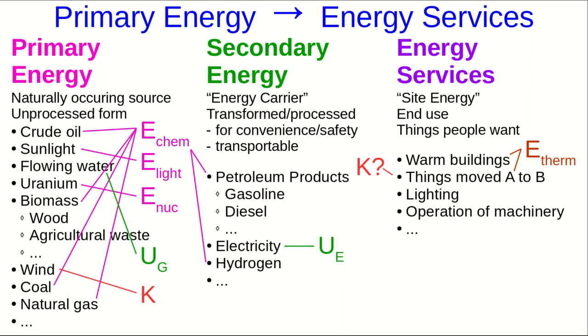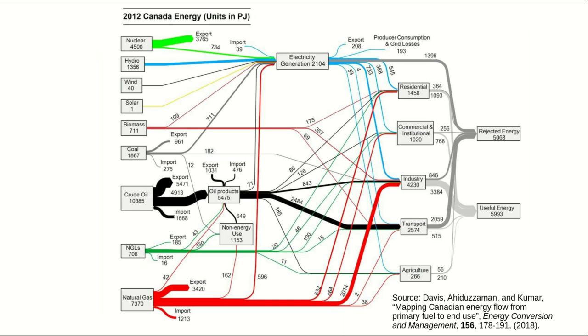On a societal level, all of these conversions of energy from one form to another coming from so many sources can get pretty complicated and visualizing it is difficult. And so there are some diagrams that can be helpful. One is what's called a Sankey diagram and these aren't just used for energy. They get used for things like international trade and all sorts of other things. But let's have a look at this one which is showing the 2012 energy use for all of Canada.